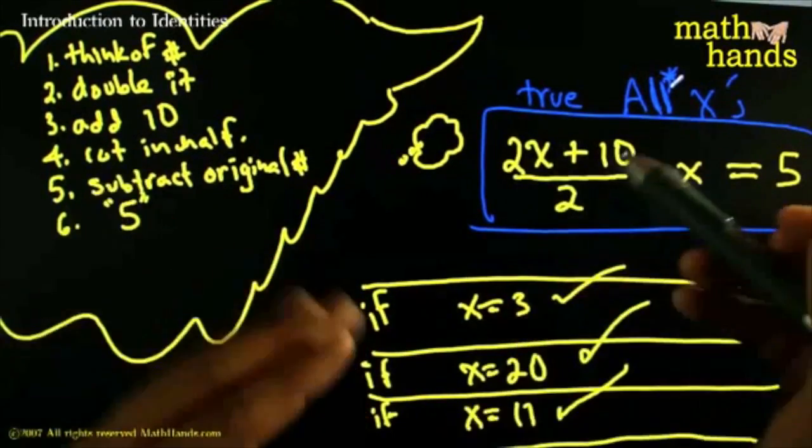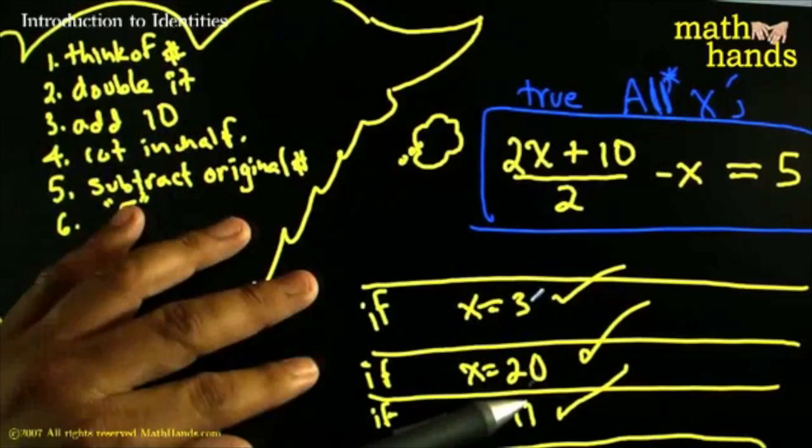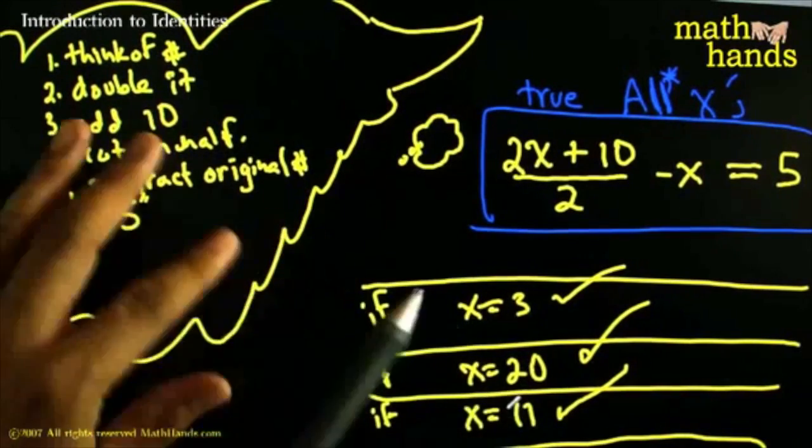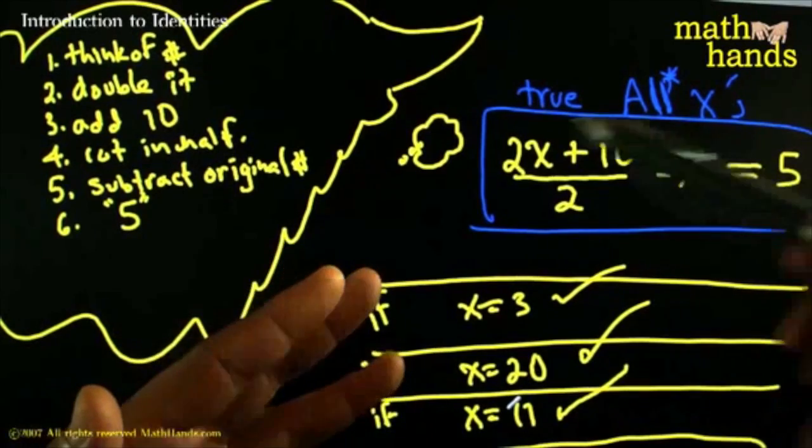It works no matter what x is. So it wouldn't have mattered which number you thought about. If you had thought about 3, it would have worked. If you had thought about 20, it would have worked. If you had thought about 11, it would have worked. And the suspicion, although we haven't proved it, is that it will work for all possible values of x.